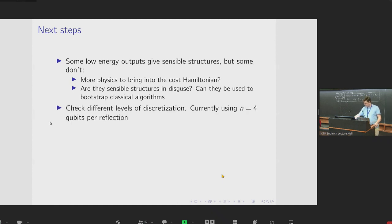Secondly, we should try different levels of discretization. So in the example I showed, we used n equals four qubits per reflection, but perhaps we can get away with using fewer or maybe we need to use a few more to get the results better. That's something to investigate.